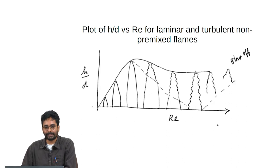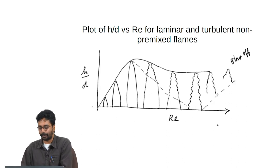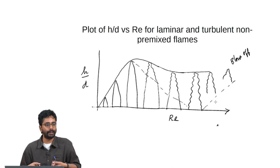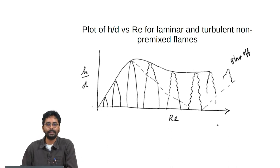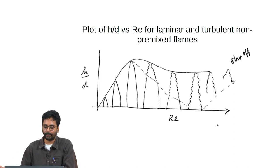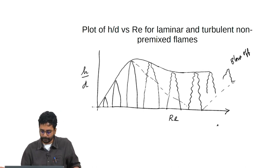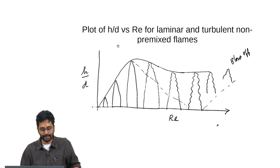At some point the entire flame becomes turbulent. If Reynolds number is increased beyond that, the flame lifts off, because locally the transport rate of fuel to the flame is not matched by the reaction rate. If increased further, it blows off because fuel is issued at a rate greater than the flame can consume, bringing down the temperature. In the laminar regime, the linear relationship h/d ~ Re is accurate.